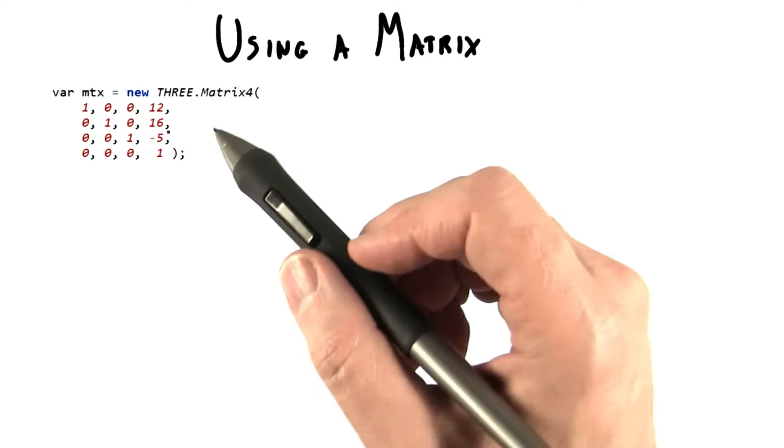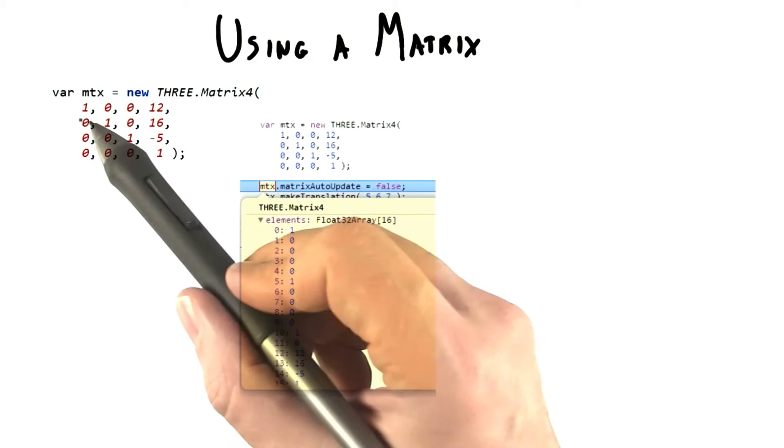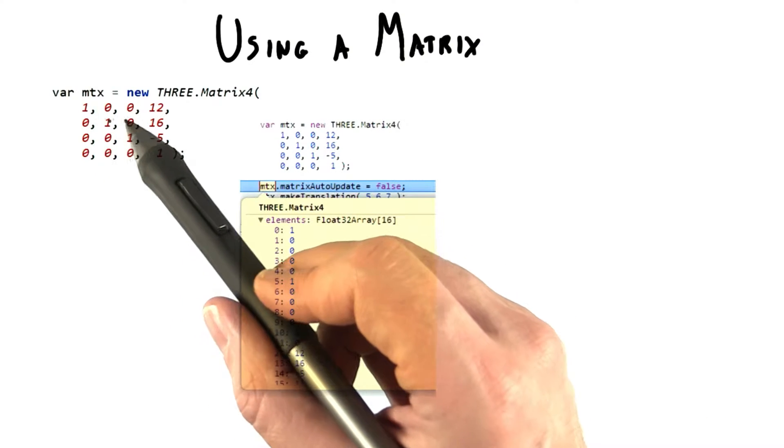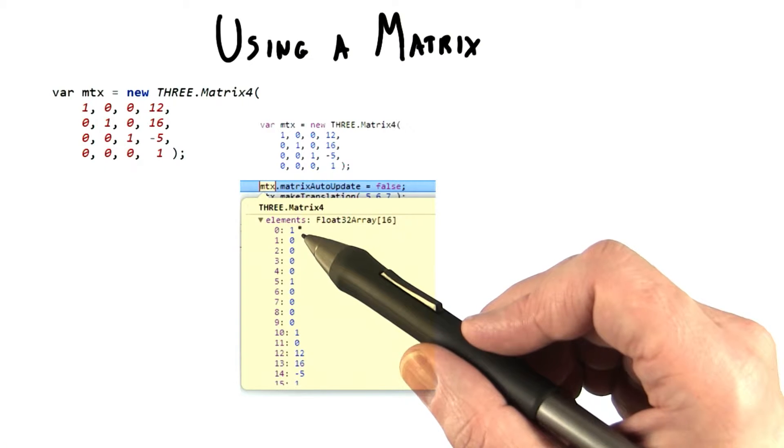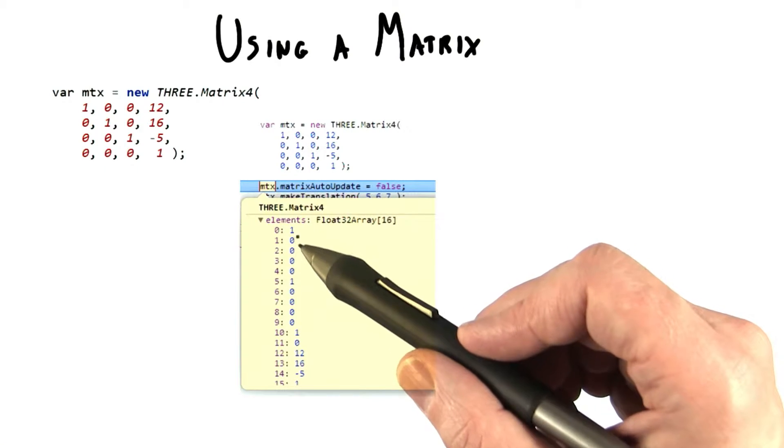However, this order is not how the data is stored in the matrix itself. Looking at the order here, 1, 0, 0, 12, you might expect to see that in the matrix itself, but instead you see 1, 0, 0, 0.